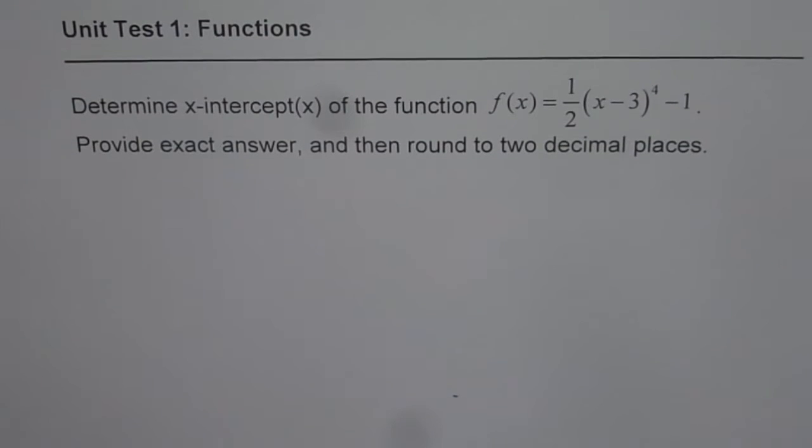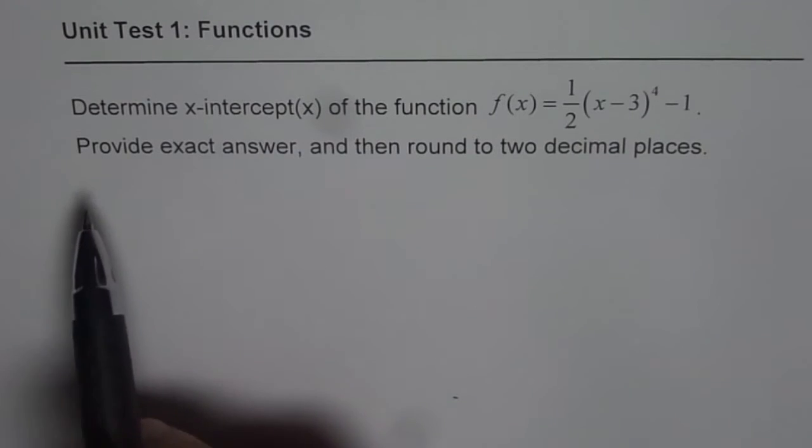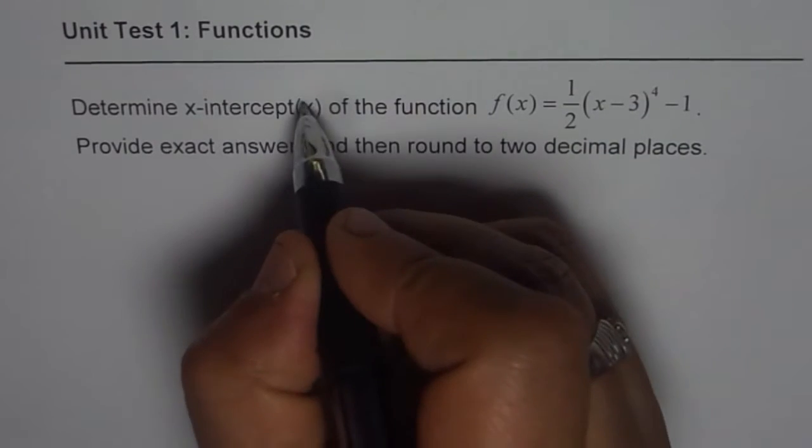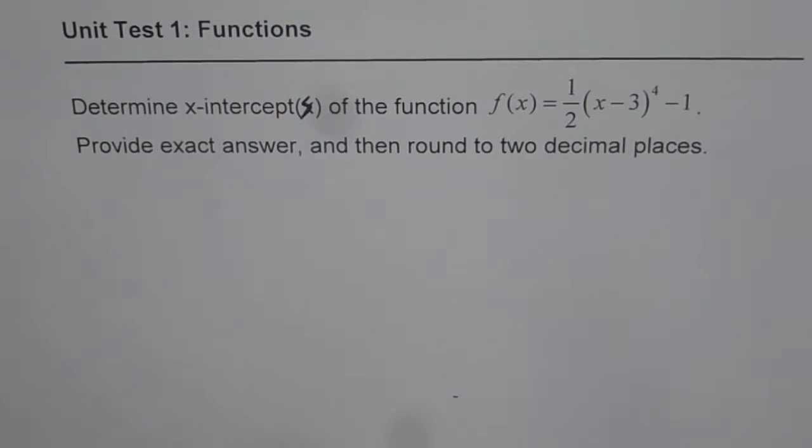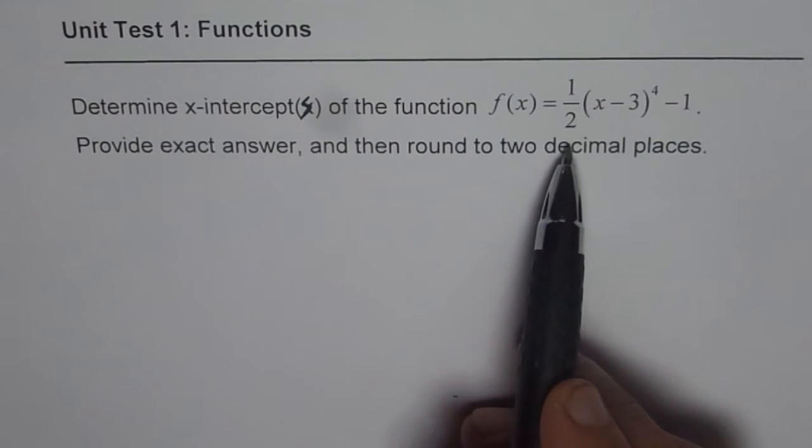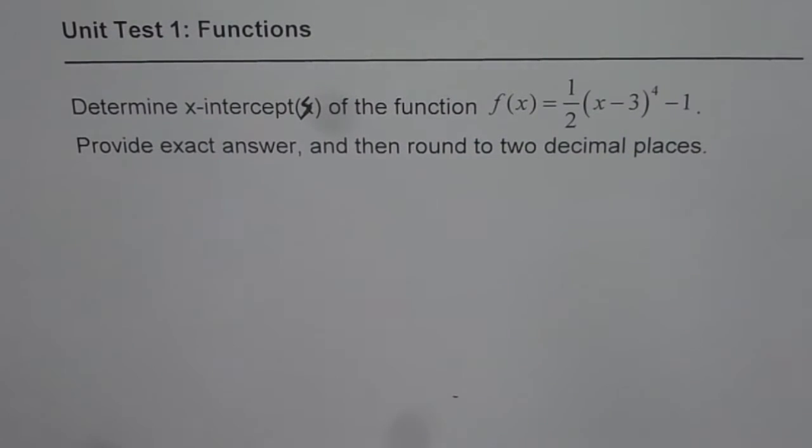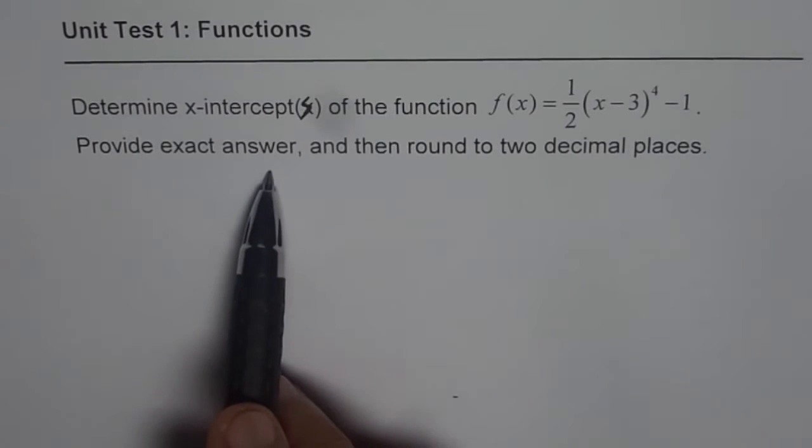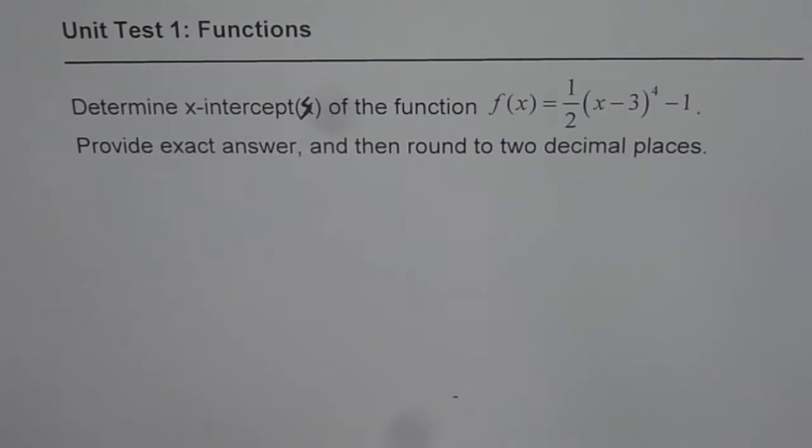I'm Anil Kumar and here is another question from Unit Test 1 Functions. Determine x-intercepts of function f(x) equals one-half of (x minus 3) to the power of 4 minus 1. Provide exact answer and then round to two decimal places.